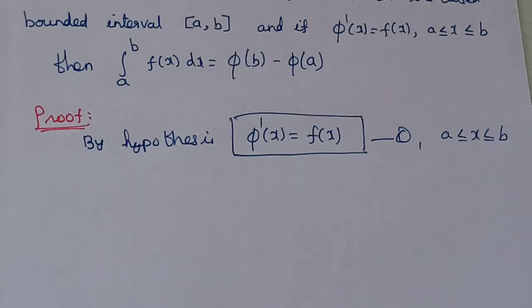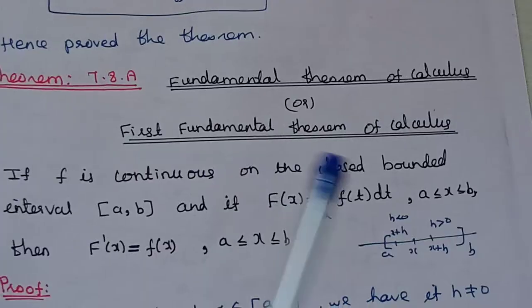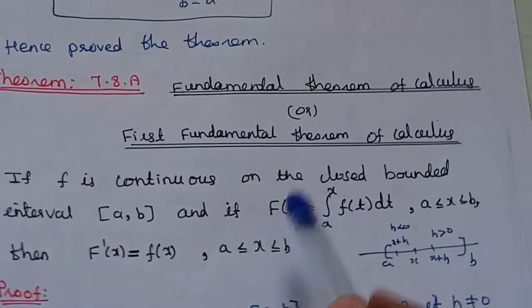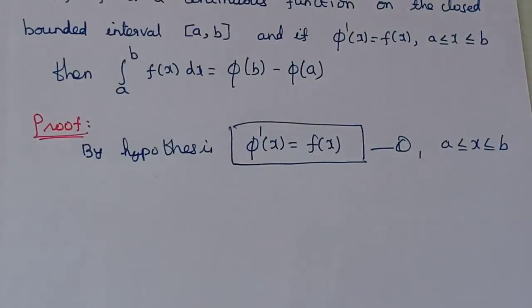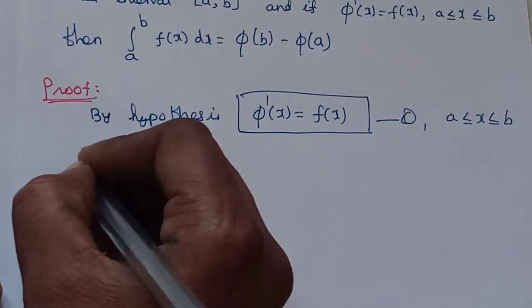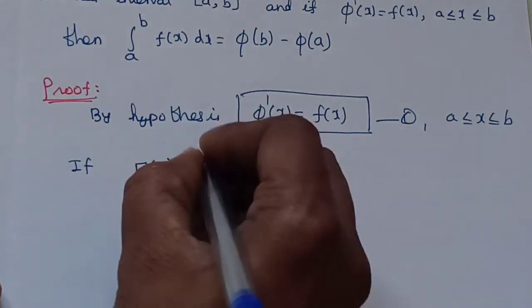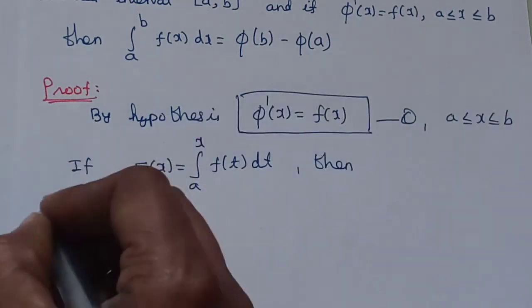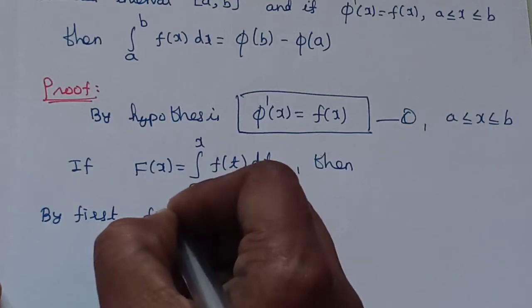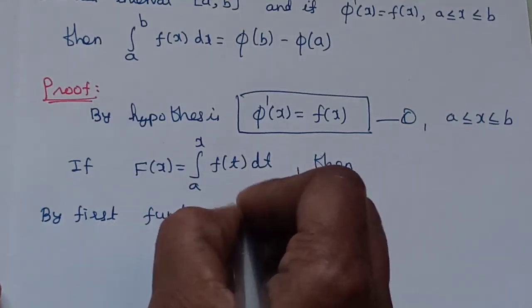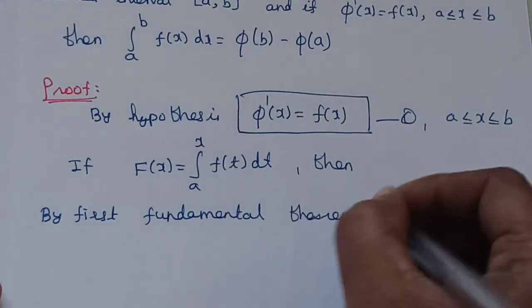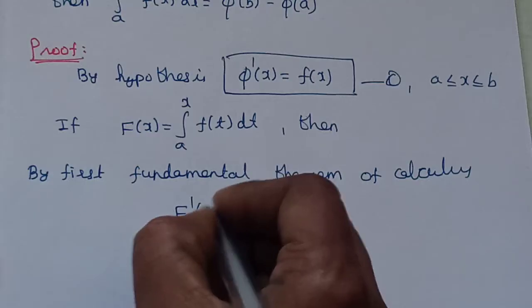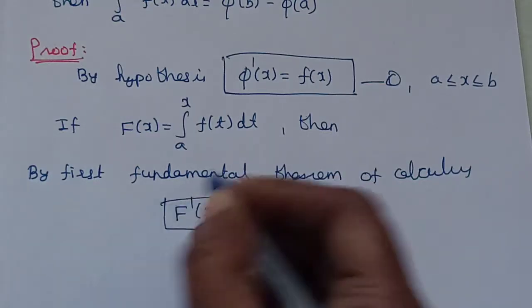Now referring to the First Fundamental Theorem of Calculus: if F is a continuous function on the closed bounded interval, and if F(x) equals the integral from a to x of f(t) dt, then by the First Fundamental Theorem, F-dash of x equals f of x. This is equation two.